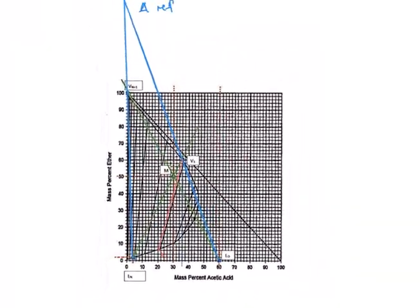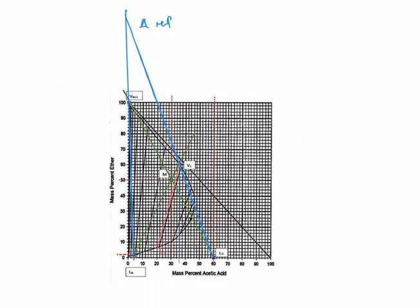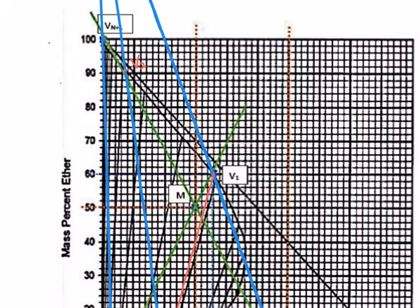Next, follow the same method: connect your L1 to the reference point. I've drawn the line from L1 to the reference point, and the position where it intercepts the equilibrium curve will be your V2. Next, you do it again because you still need to create another tie line.